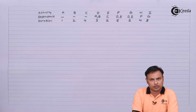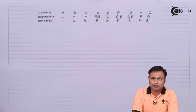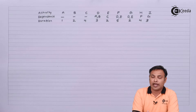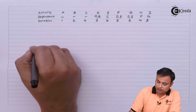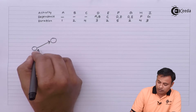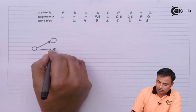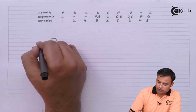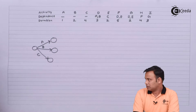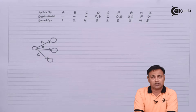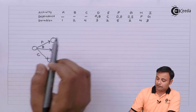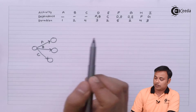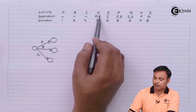Let's first draw the network diagram and then we can proceed further. We have activities A, B and C as the initial activities. After C we have E, and after A and D we have D.